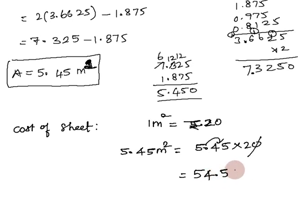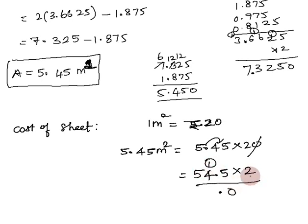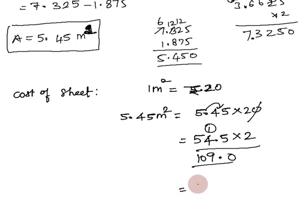Multiplying 54.5 × 2: 2 × 5 = 10 carry 1; 2 × 4 = 8+1 = 9; 2 × 5 = 10. The result is 109. So the cost of the sheet is 109 rupees.